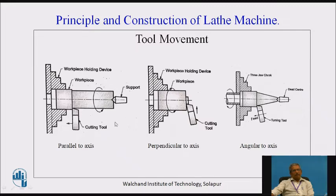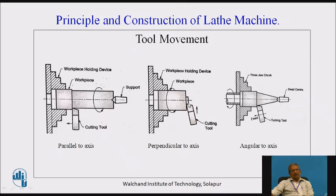When the cutting tool moves perpendicular to the axis, the workpiece is held in the chuck and rotated at the required RPM, which is decided based on material diameter and machinability. The tool type is also decided accordingly. Here, material is removed from the face, reducing the length of the workpiece. If 1 mm of material is removed, the length is reduced by 1 mm.